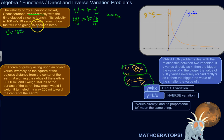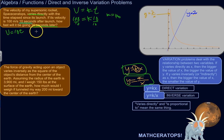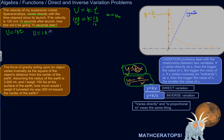How fast will it be going 15 seconds later? 15 seconds later than the 10-second mark means 25 seconds after launch. So V equals 10 times 25, which gives V equals 250 meters per second.